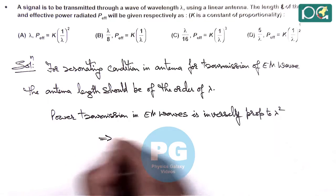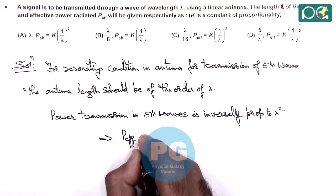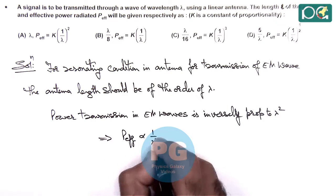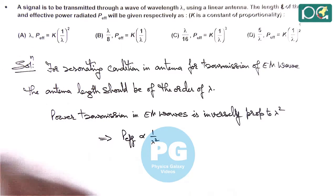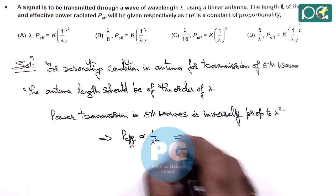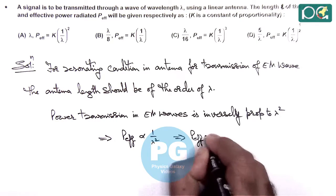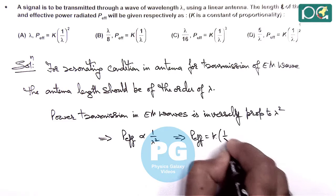So here the effective power when we talk this is inversely proportional to lambda square. This is also matching with option A. So here it gives the effective power transmission as k times 1 by lambda square.